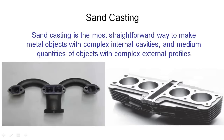Sand casting is the most straightforward way to make metal objects with complex internal cavities in high volumes, and medium quantities of objects with complex external profiles. So if we look at this picture on the left here, this is actually an exhaust manifold cast out of iron that you would typically find on a lot of your production cars. The hot exhaust gases exit out of the head of the engine through these ports and are collected together and flow on into the exhaust system, your muffler and your catalytic converter.